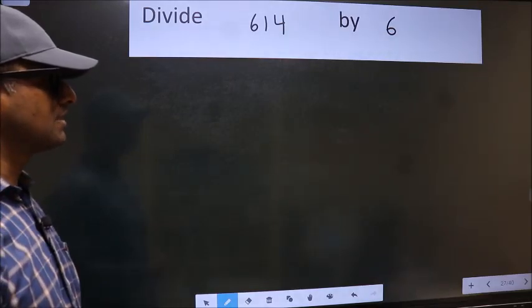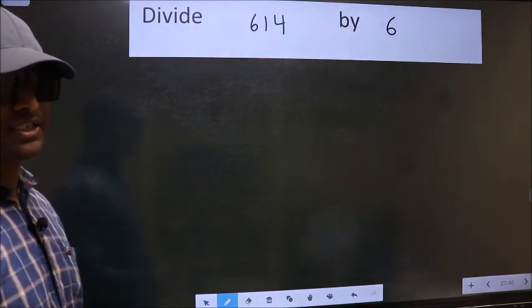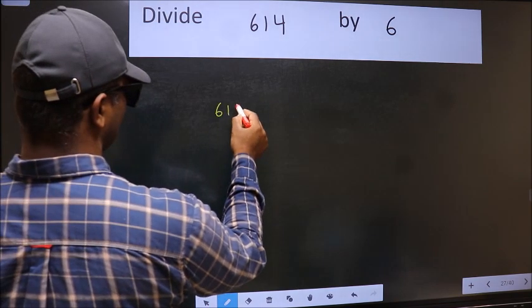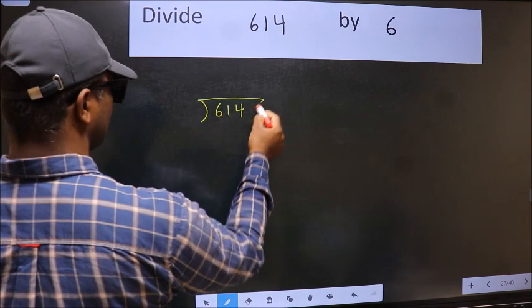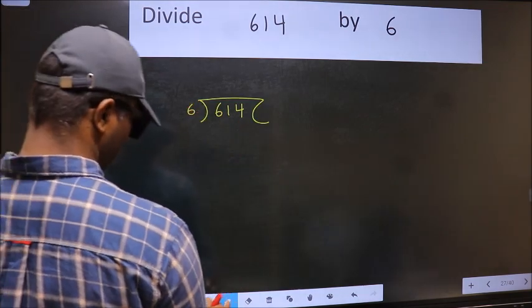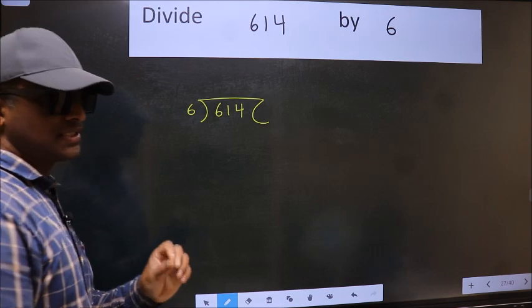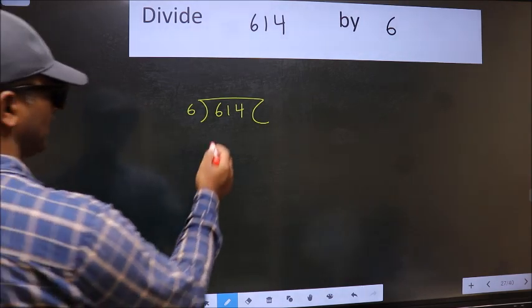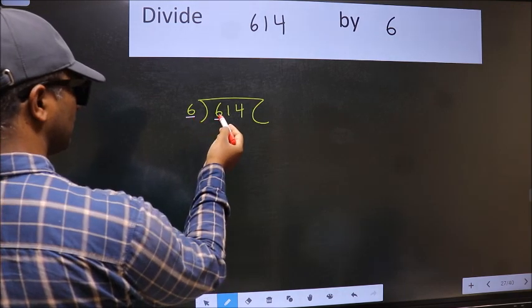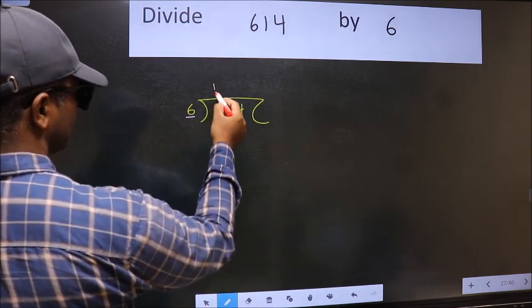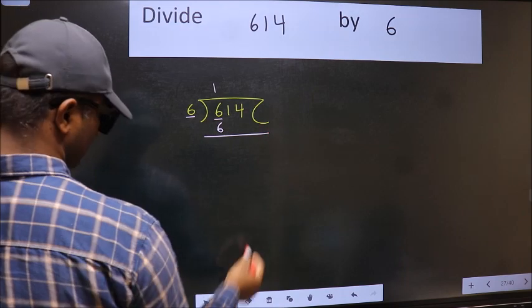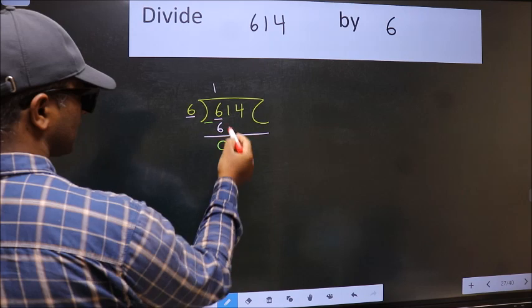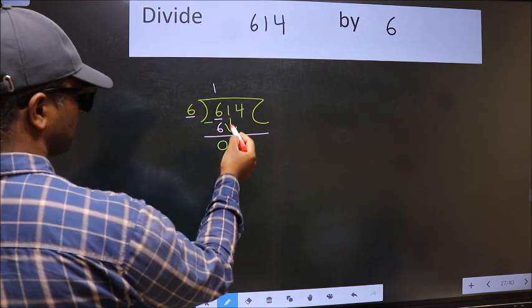Divide 614 by 6. To do this division, we should frame it in this way: 614 here and 6 here. This is your step one. Next, here we have six, here also six. When do we get six in the six table? Six ones is six. Now we should subtract, we get zero. After this, bring down the beside number, so one down.